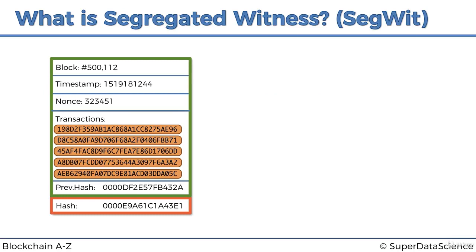Let's have a look — this is our block, block 500,112. It's just a made-up block of course. As you can see it's got quite a few things inside: block number, timestamp, nonce, previous hash, hash, and a couple of other things. All of those are called the block header, because they are not the transactions — they're not the actual contents, just additional information that goes along with the block. The transactions are the main body of the block.